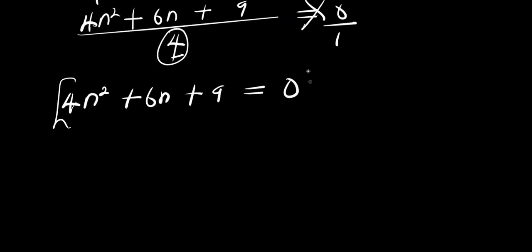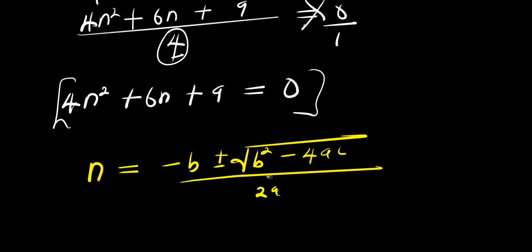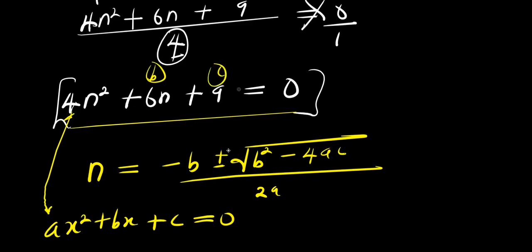We solve this quadratic using the quadratic formula: n equals negative b plus or minus square root of (b² minus 4ac) divided by 2a. Comparing to the general form ax² plus bx plus c equals 0, we identify a equals 4, b equals 6, and c equals 9.